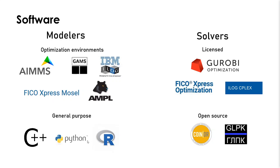There are specific libraries for these languages. These have evolved over the last years and are better than they used to be, but they require a little more effort to create models. These optimization environments are specifically designed to facilitate the developer task, but most of them are licensed and more expensive, so there is a trade-off. If you want to build models fast, you might want to use these, but you'll have to pay the license.